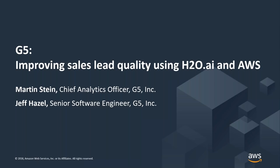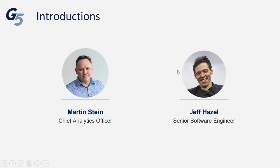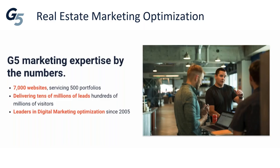This is a good segue to hand it over to our friends at G5 — Martin Stein and Jeff Hazel. They have a really amazing use case using H2O and Driverless AI on AWS. Thank you, Vinod. My name is Martin Stein, and I am the Chief Analytics Officer here at G5. And with me is Jeff Hazel, Senior Software Engineer at G5. Thank you to Amazon and H2O for giving us an opportunity to speak about our very short and very successful pathway into machine learning using AWS and H2O Driverless AI.